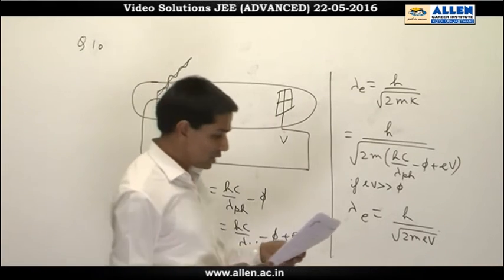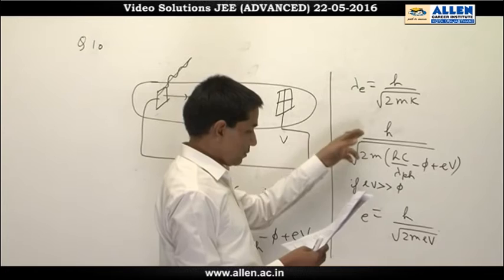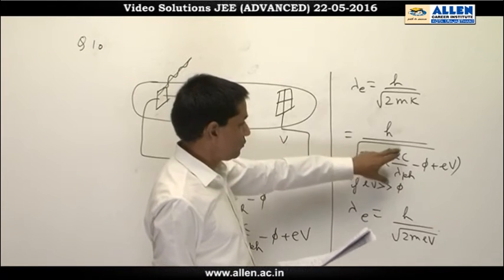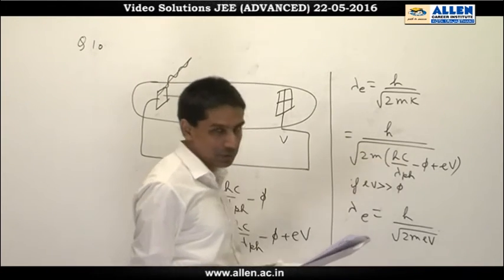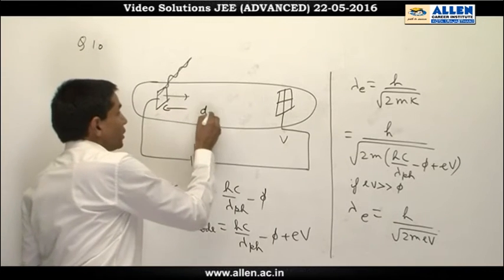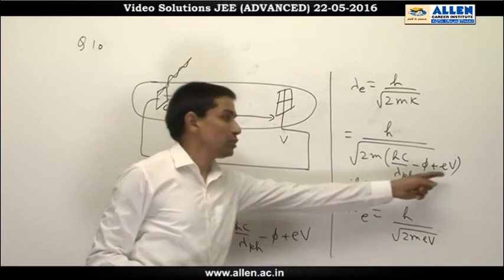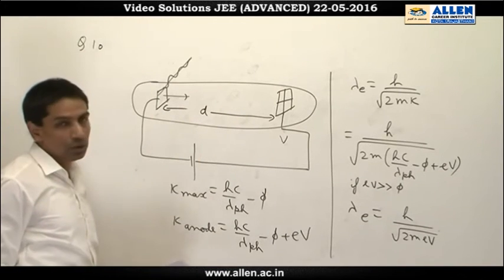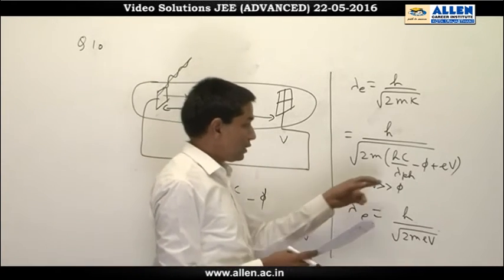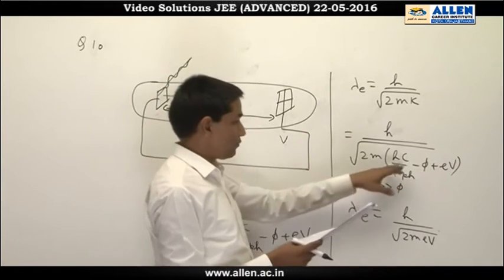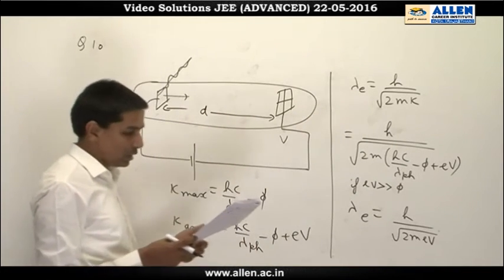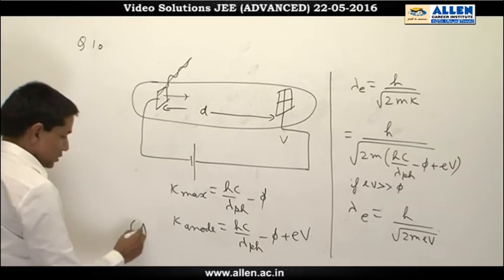Looking at option D, they say that λ_e increases at the same rate as λ_ph — but it does not increase at the same rate because that term is under a square root. Also, the distance d does not figure at all in the equation because what matters is the potential difference. Furthermore, option D says λ_e decreases with increase in φ and λ_ph — but if we increase λ_ph, this term hc/λ_ph decreases, so the kinetic energy decreases and λ_e would increase, not decrease. So option D cannot be correct, and the only correct option is A.